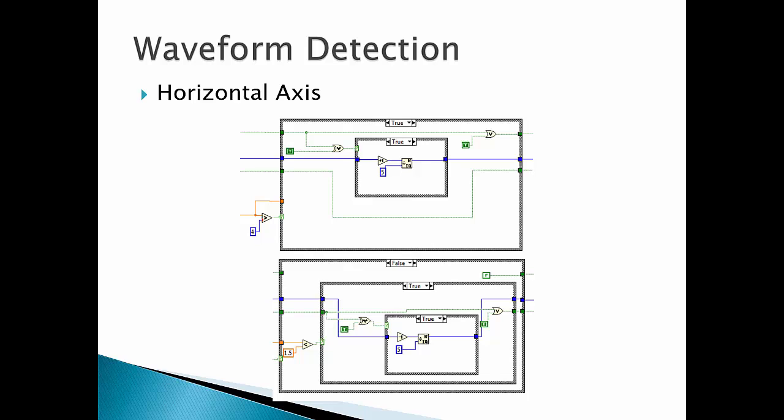A similar method is used for the vertical axis. The only difference is that the upper and lower thresholds are different and also that the wraparound counter goes from 0 to 2 since there are only 3 rows in the LED grid.